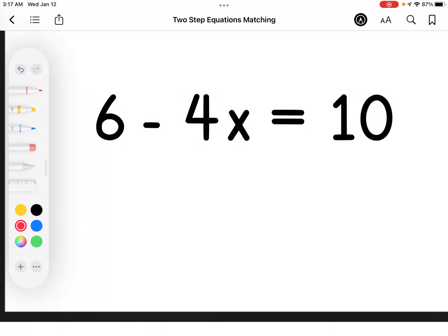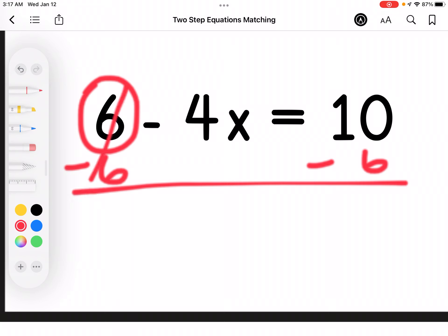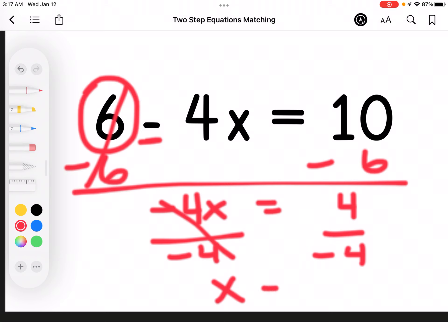This one's a little bit tricky because I have a positive 6 here. A zero pair will be a negative 6. So I have a negative 4x equals 4. I'm dividing by negative 4 on each side, and I know you're going to say, but that's a subtraction sign, and it is. But a subtraction sign and a negative sign are treated the same way. A negative 4 divided by a negative 4 leaves me with 1x, and a 4 divided by a negative 4 is negative 1.